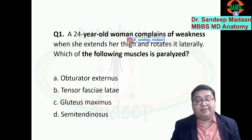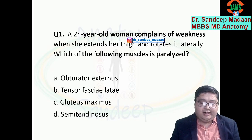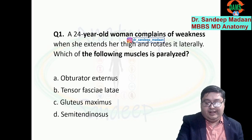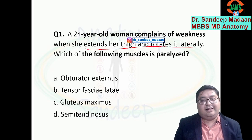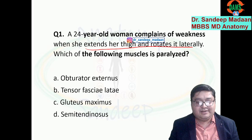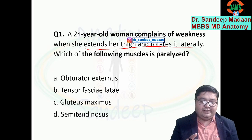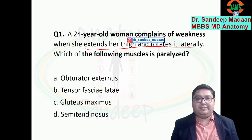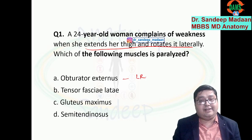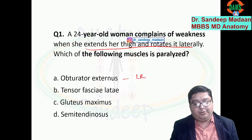This is question number one. A patient complains of weakness when she extends the thigh and rotates laterally. So these two actions should be there for the muscle. Let us look at the actions of these muscles. Obturator externus does lateral rotation, but does it extend? No.